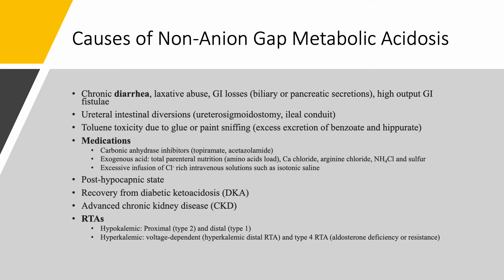Let's look at the causes with more specificity. We have chronic diarrhea, laxative abuse, but any GI loss due to biliary or pancreatic secretions, high-output GI fistulae, and urethral diversion — whether it's ureterosigmoidostomy or ileal conduit. Toluene toxicity due to glue or paint sniffing, because you have excess of benzoate or hippurate, will give you non-anion gap acidosis. Please note that if you have impaired renal function, you're going to have retention of benzoate and hippurate and you will have an anion gap. But if renal function is intact, these metabolites will be quickly excreted with sodium and potassium, and you will not have an anion gap.